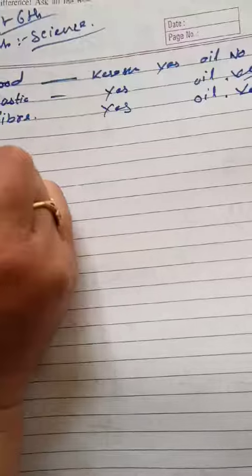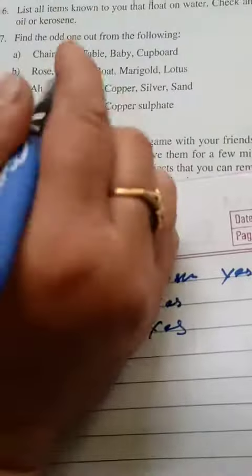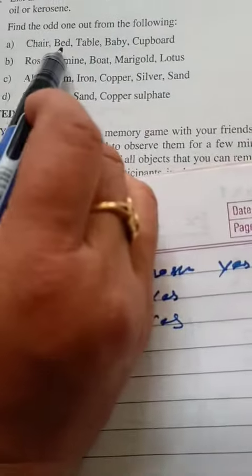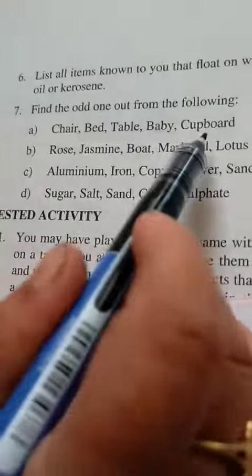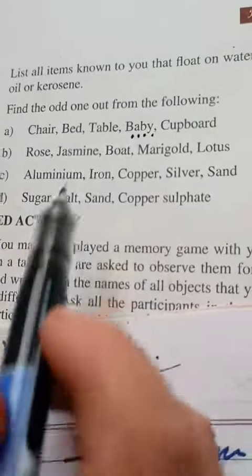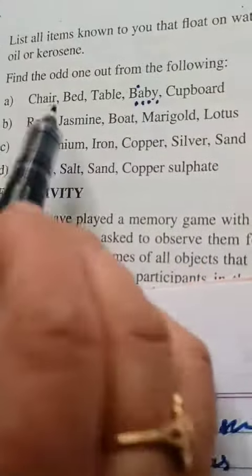Question number 7. Find the odd one out from the following. The odd number is different. There are chair, bed, table, baby, cupboard. The chair, table, bed, cupboard. I thought the baby is not the same. There is an odd one out, the baby is not the same.